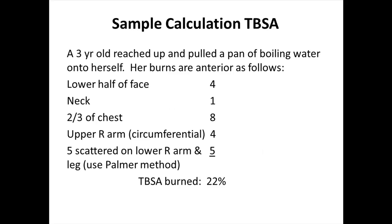This slide is a sample of the calculation of a total body surface area burn. A three-year-old reached up and pulled a pan of boiling water onto herself. Her burns are anterior to her body as follows: the lower half of her face equals 4%, her neck is 1%, two-thirds of her chest equals 8%, her upper right arm circumferentially is 4%, and she also has five scattered burns on her lower right arm and on her leg. Using the Palmer method, this gives 5%. Therefore, in this child, the total burn surface area is 22%.